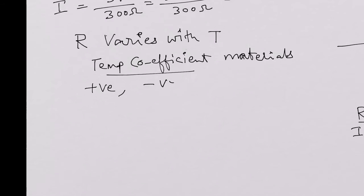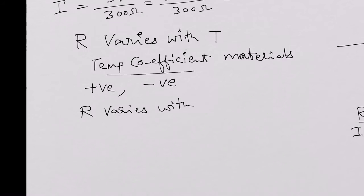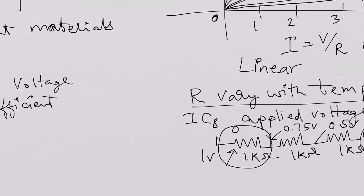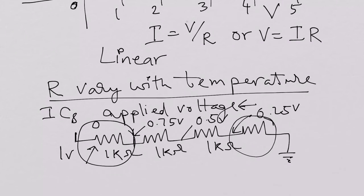R also varies with the applied voltage in ICs — that's called a voltage coefficient. For example, consider polysilicon resistors in an IC with VDD of 1 volt and four equal resistors of 1 kilo-ohm each. Each drops 0.25 volts, so voltages along the string are 0.75V, 0.5V, and 0.25V. The resistor placed between 0.25V and ground might show slightly different resistance compared to the one placed between 1V and 0.75V.